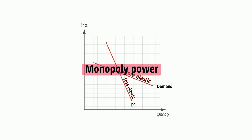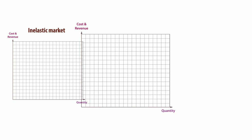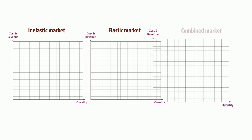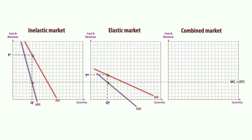In evaluating price discrimination, from a firm's perspective it enables profit to be maximized. Diagrammatically, we can see that in the less elastic sub-market, the demand curve is steeper and profit is maximized at a higher price. When demand is more elastic, price will be lower. When sub-markets are combined, price will be between the two prices.